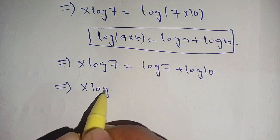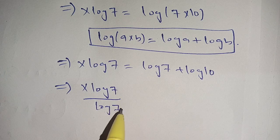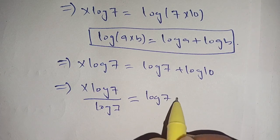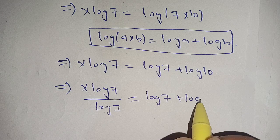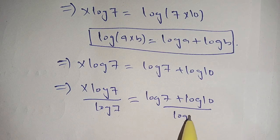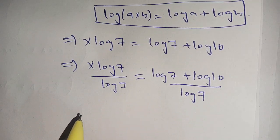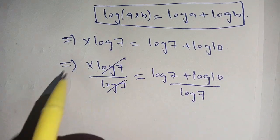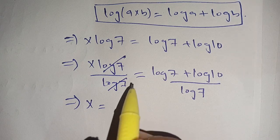In the next step, dividing both sides by log of 7, we get x log of 7 divided by log of 7 is equal to log of 7 plus log of 10 divided by log of 7. We can cancel out log of 7 on the left side.